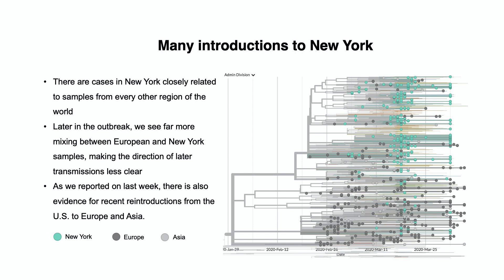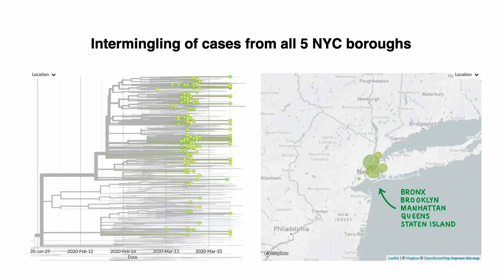True to its cosmopolitan nature, there are cases in New York closely related to samples from other regions of the world. The early New York cases likely represent inbound transmissions. Later on in the outbreak, we see far more mixing between European and New York samples, making the direction of later transmission less clear. As we reported on last week, there is also evidence for recent reintroductions from the U.S. to Europe and Asia. Within New York City, we see little segregation of cases by boroughs, which is consistent with frequent mixing of cases across the city.